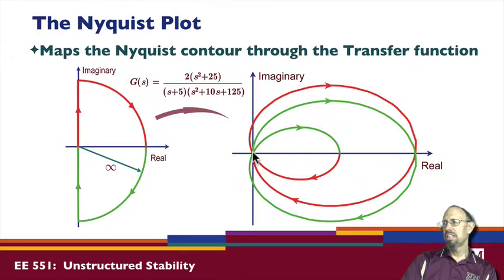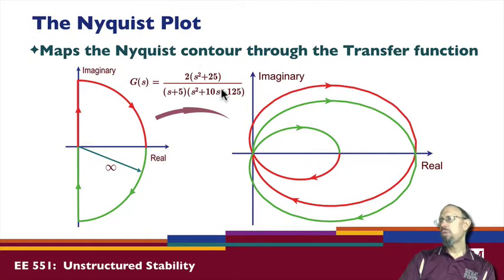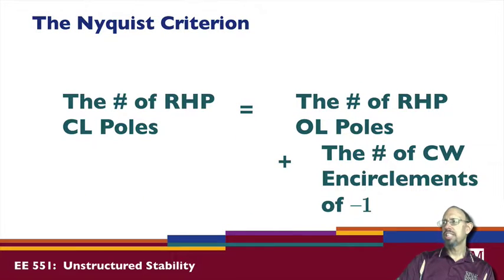The whole semicircle of radius infinity maps into the single point at the origin, because at infinity this quantity equals zero. So even though this looks like a large part of the contour, it maps to a single point on the Nyquist plot. That's the Nyquist plot — we're mapping the Nyquist contour through the transfer function. The Nyquist criterion states: the number of right-half plane closed-loop poles equals the number of right-half plane open-loop poles plus the number of clockwise encirclements of the point minus-one in the complex plane.